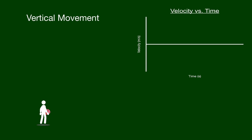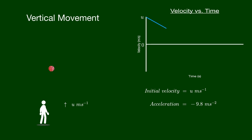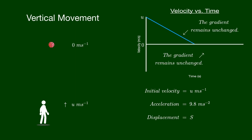Let's draw a velocity-time graph when the ball is thrown up at a velocity of u meters per second. The ball will decelerate by 10 meters per second per second until its velocity reaches zero. At that point the velocity of the ball is zero, and the ball will start to descend at an initial velocity of zero meters per second. The gradient of the graph will not change since the acceleration of the ball is constant throughout its path.